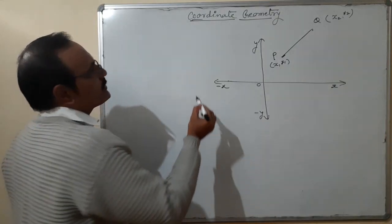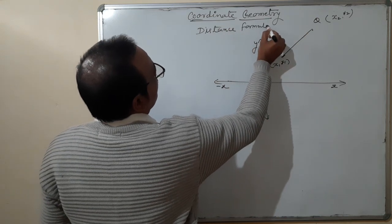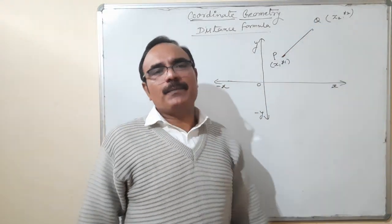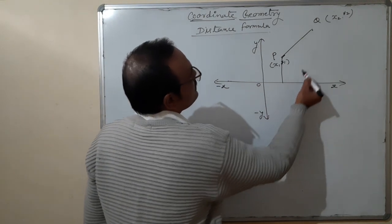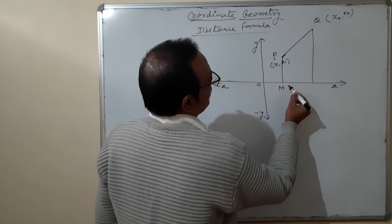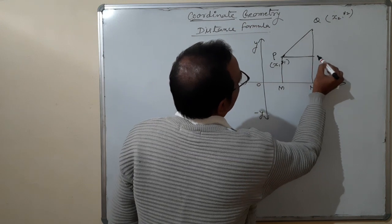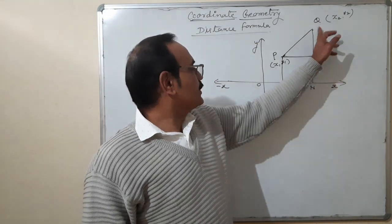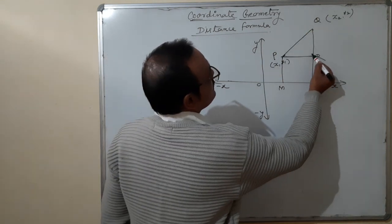What we are finding is the Distance Formula — the distance PQ. For finding the distance, I will draw one perpendicular here on the x-axis, a second perpendicular again on the x-axis — suppose M and this point is N — and I will draw one perpendicular on this line and give the name R.